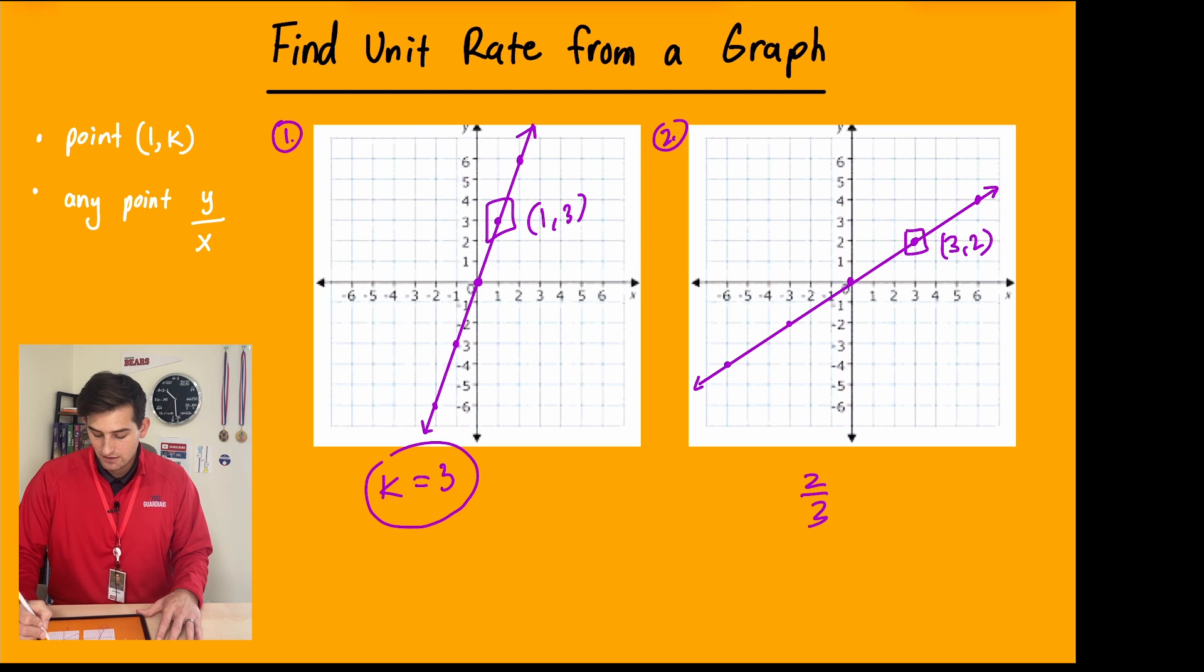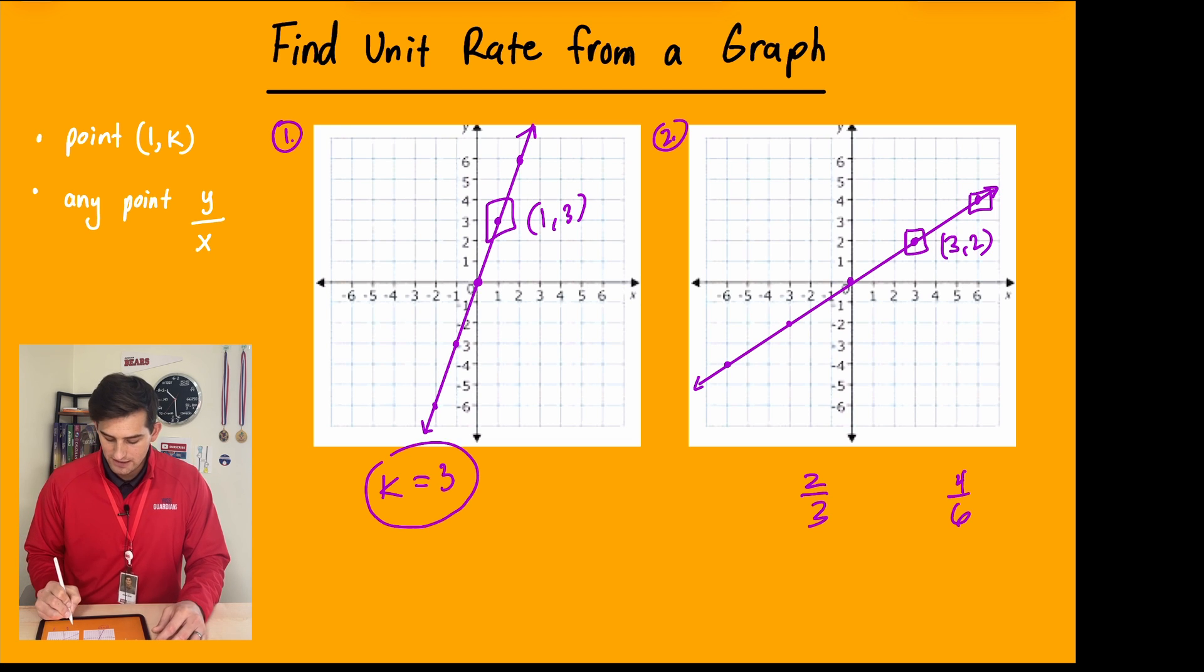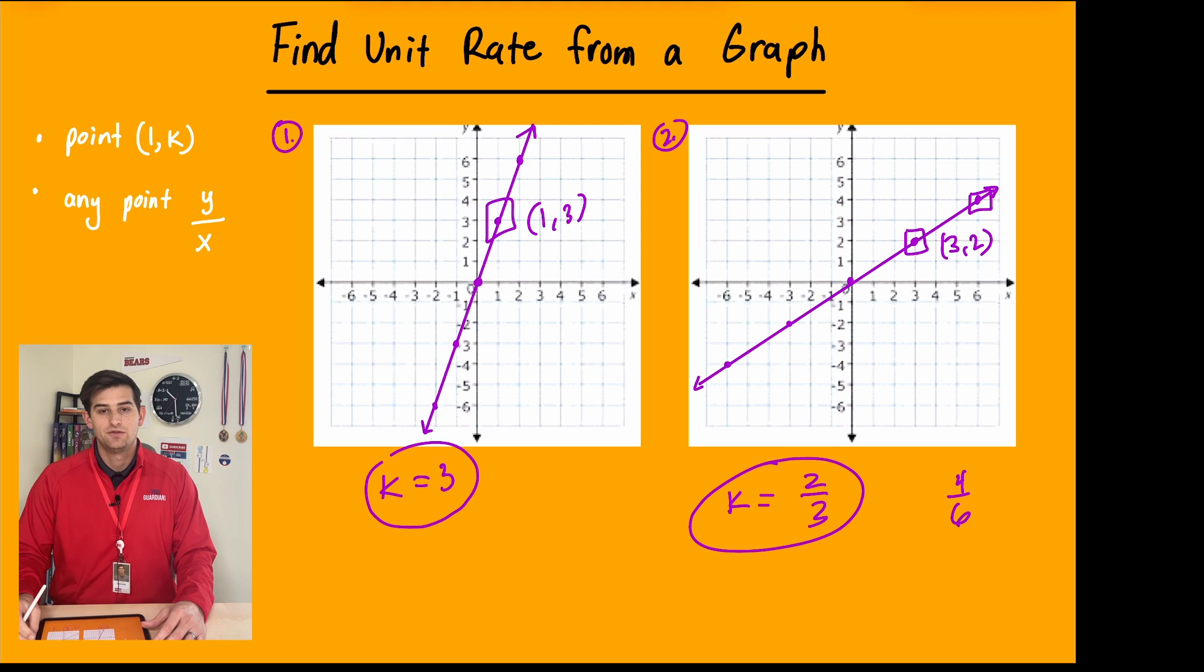If I would have chosen, let's say, this point, and I would say 6 over 4, well, then we would reduce that because we know 6 and 4 are both divisible by 2. And that would give us, or excuse me, not 6 over 4. It would be y over x, so 4 over 6. Both of those would be divisible by 2. So it would eventually become 2 thirds. So in this case, we will say our unit rate, or k, is equal to 2 thirds.